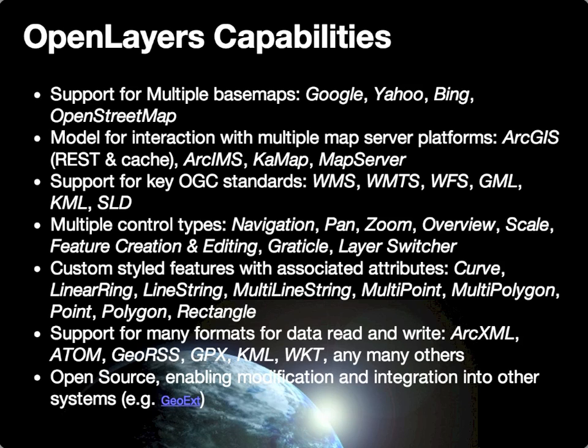In addition to having access to these feature primitives that you can define in terms of specific geometry types, OpenLayers also has direct support for many different data formats that it can both read — retrieving those data from a remote server and integrating them into the interface — but also write in some cases, so that you can generate data on the client side within the web browser and make it available for the user to download or send back to a server as part of a larger application.